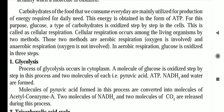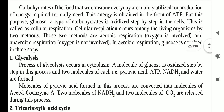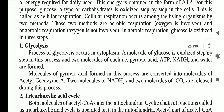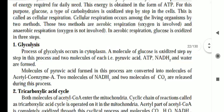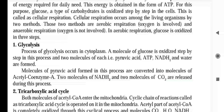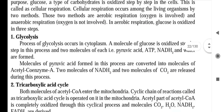Glucose, a type of carbohydrate, is oxidized step by step in the cell — this is cellular respiration. Cellular respiration occurs in living organisms by two methods: aerobic respiration, which involves oxygen, and anaerobic respiration, in which oxygen is not involved. In aerobic respiration, glucose is oxidized in three steps.